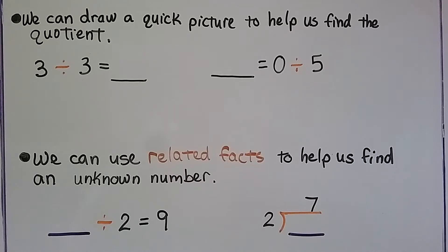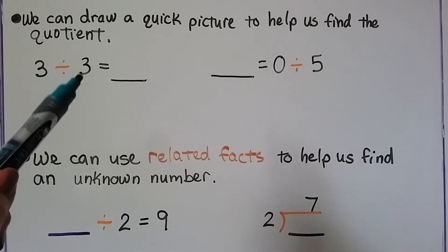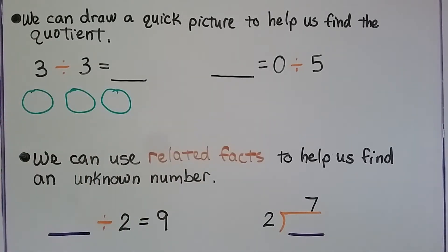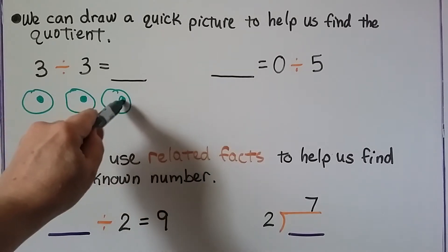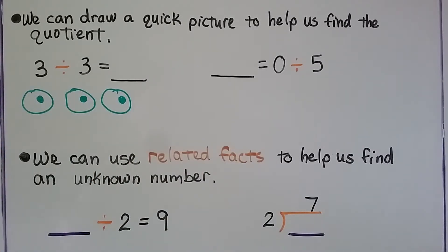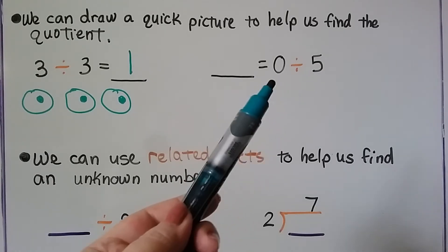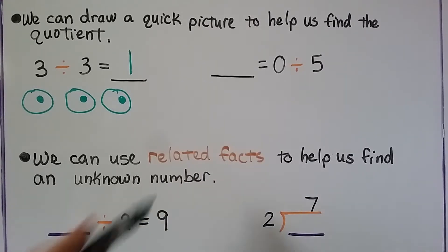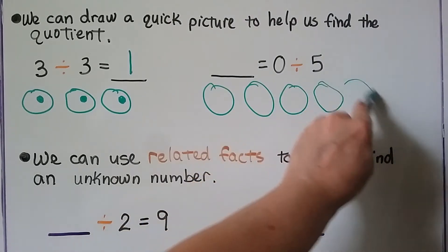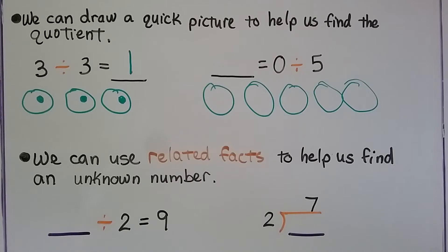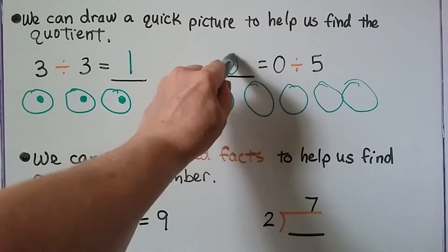We can draw a quick picture to help us find the quotient. We have 3 divided by 3 — 3 in all divided into 3 groups. If we put 1 counter in each of the 3 groups, there's 1 in each group, so the quotient is 1. For the next one, some number equals 0 divided by 5. We have 0 counters but 5 groups, so there are 0 counters in each group — the quotient is 0.